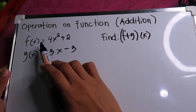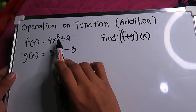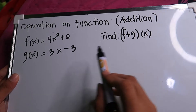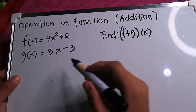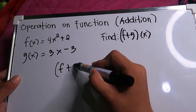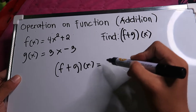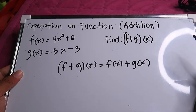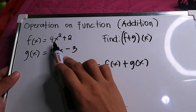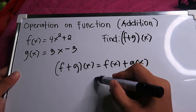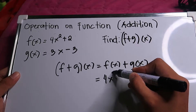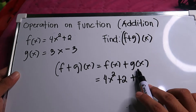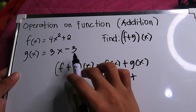Another example of operation on functions — addition. We have f(x) equal to 4x squared plus 2, and g(x) equal to 3x minus 3. Find the quantity of (f + g)(x). We have (f + g)(x) equals f(x) plus g(x). The value of f(x) is 4x squared plus 2, so copy: 4x squared plus 2.